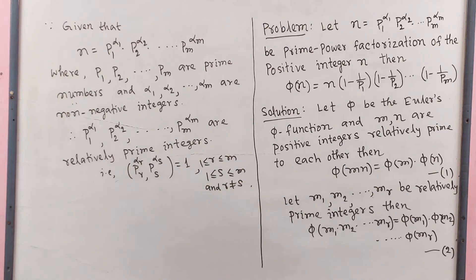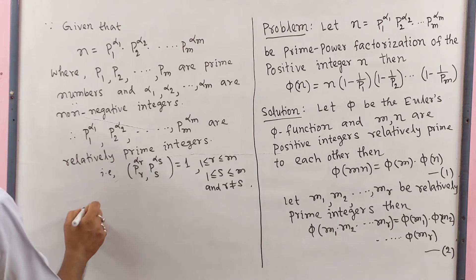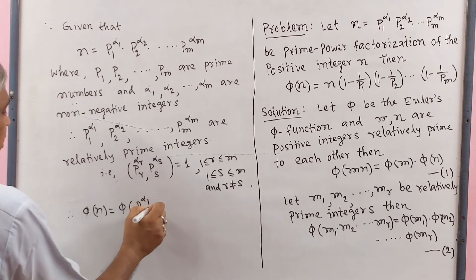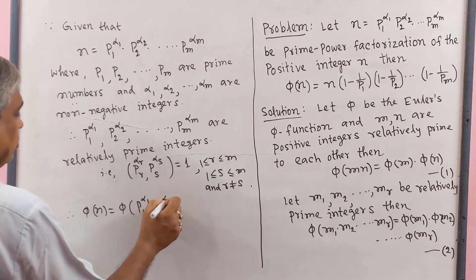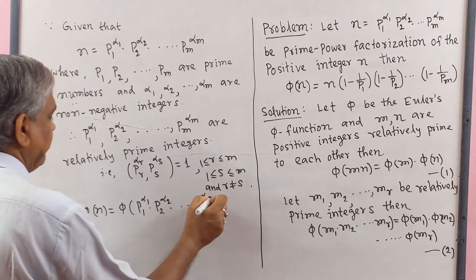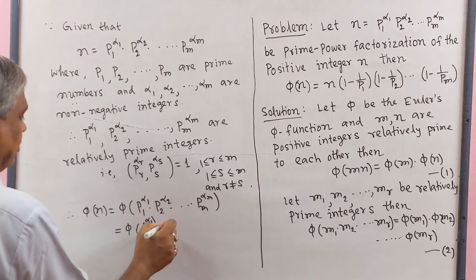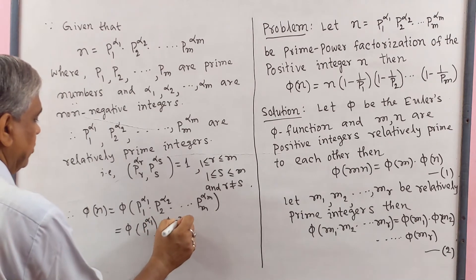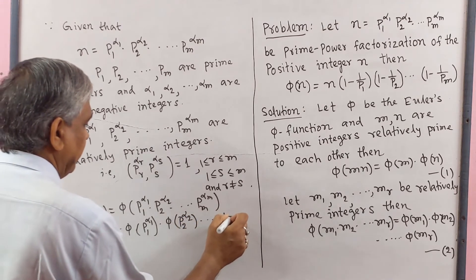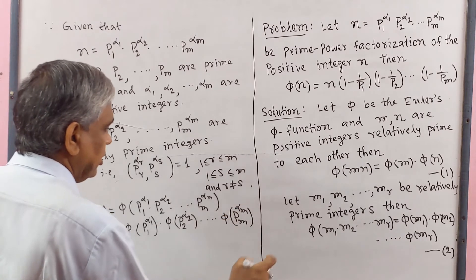Therefore phi(n) equal to phi(P1^alpha1 · P2^alpha2 · dot dot dot · Pm^alpha m) equal to phi(P1^alpha1) · phi(P2^alpha2) · dot dot dot · phi(Pm^alpha m), using property 2.